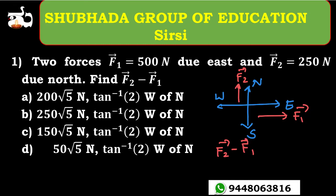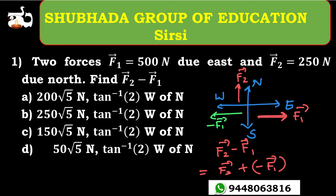To subtract two vectors, you treat it as F2 vector plus (minus F1 vector). If it were plus F1, then minus F1 would be exactly the reverse of that. That is the reason why we use minus F1 vector.